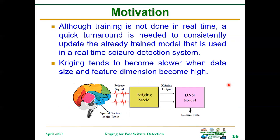Another motivation is that Kriging tends to become slower when data size and feature dimension become high, and this is where DNN shines. We have used Kriging methods alone in previous works, but when data size increases and feature dimension grows high, Kriging becomes slower. DNN thrives on high data size and high feature dimension. So a synergy of Kriging and DNN will be symbiotic — beneficial for fast training and better performance even with high feature dimension and large data size.